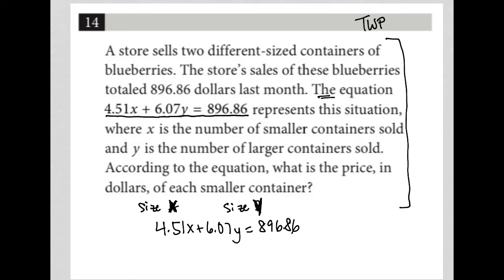According to the equation, what is the price in dollars of each smaller container? Okay, we've been told that X is the number of smaller containers sold, so that means X is associated with the price per container.